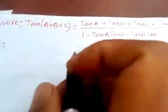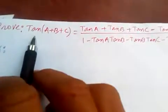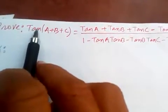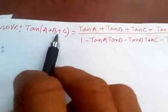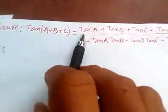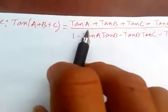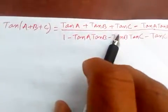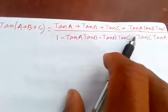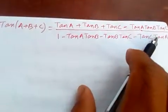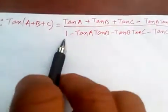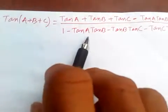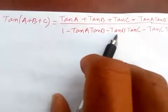Hi friends, today let's prove the trigonometric identity: tan(A+B+C) is equal to tan A plus tan B plus tan C minus tan A·tan B·tan C, all over 1 minus tan A·tan B minus tan B·tan C minus tan C·tan A.